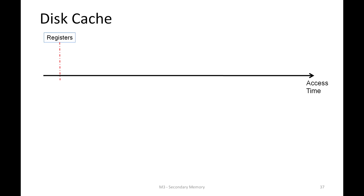Registers we can access within a few picoseconds. Following that, if we need to access the first level of cache, we would need a couple of nanoseconds to get the data back to the processor pipeline. If we miss in L1 and find the data in the second, third, or even fourth level of cache, we would typically need tens of nanoseconds.